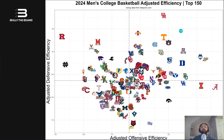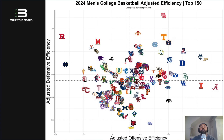The further to the right you are, the more points you score on offense. The further to the left, the fewer points you score. The closer to the top, the fewer points you give up on defense. The closer to the bottom, the more points you give up. So to reorient you: top right corner is good offense and good defense — we call this the quadrant of elites. Bottom left is bad offense and bad defense. Top left is good defense but bad offense, and bottom right is good offense but bad defense.